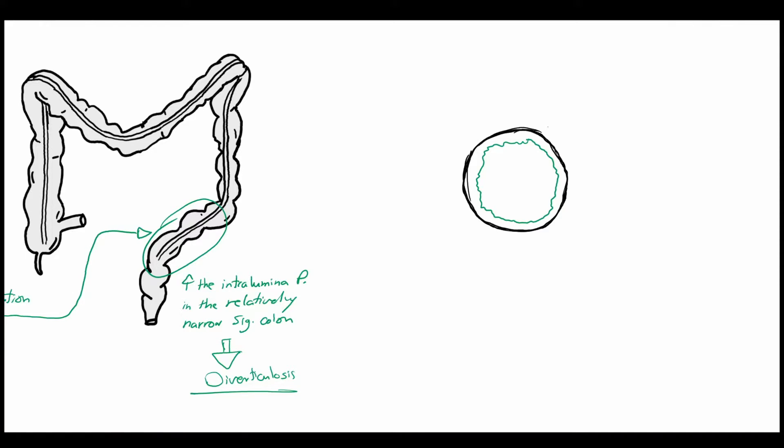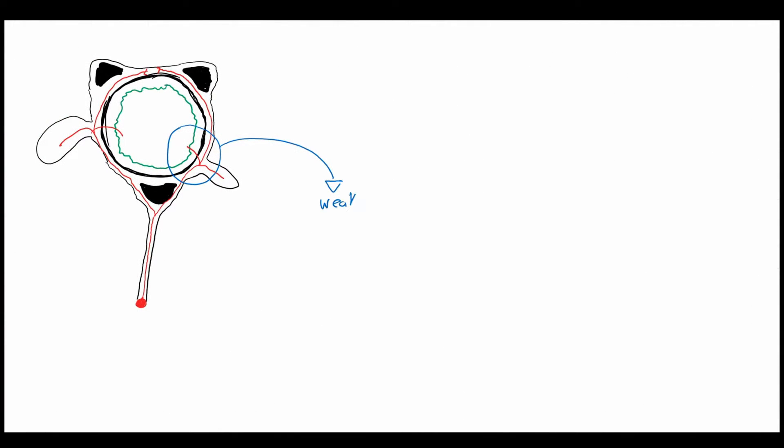As we saw in the last video, this is a cross-section of the colonic wall. Here we can see the circular muscle layer, the longitudinal muscle layer which is the taenia coli, in green we see the mucosa and the appendices epiploicae supplied by branches of the vasa recta. These branches of the vasa recta pierce the circular muscle layer to reach the mucosa, which leaves a relatively weak spot of the muscular layer.